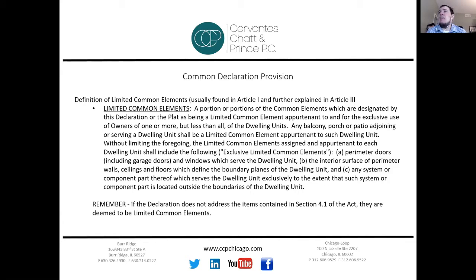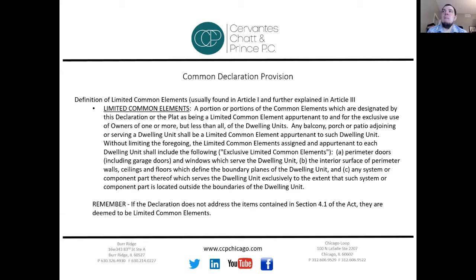He has broken down limited common elements into multiple categories. First, general limited common elements cover anything exclusively used by one owner or several owners to the exclusion of all others — generally balconies, porches, or patios. Then he creates a subset called exclusive limited common elements, which he treats differently. Those exclusive limited common elements include doors and perimeter walls, windows and perimeter walls, interior surfaces of perimeter walls, ceilings and floors, and any system or component part designed to be used by a certain unit, such as flues, ducts, and vents.